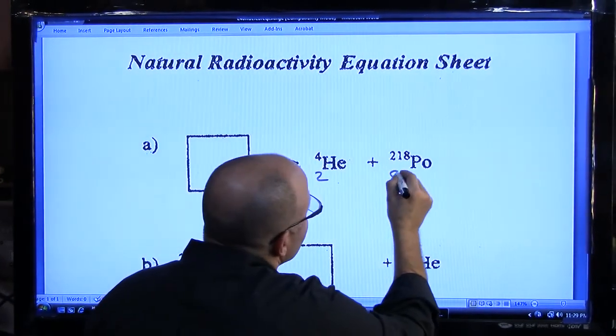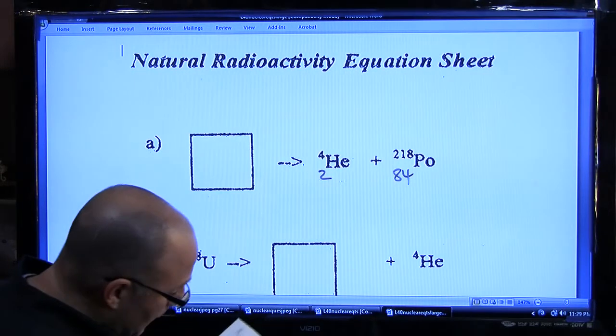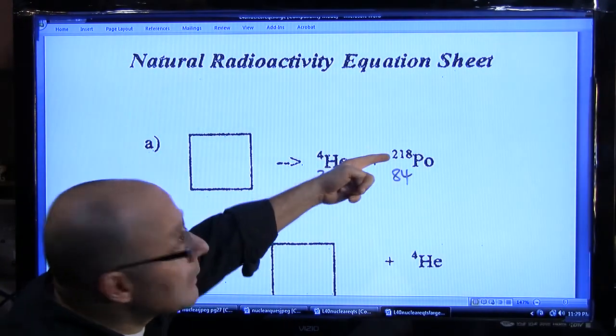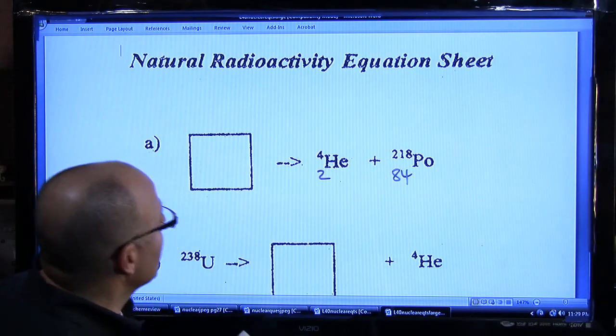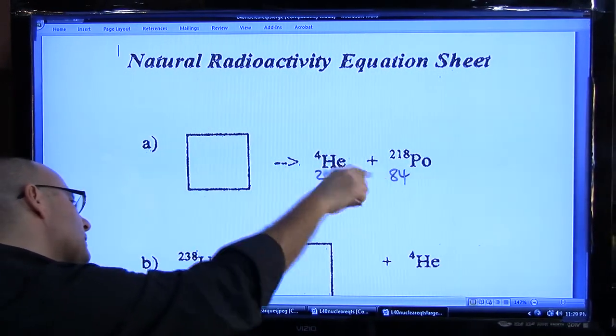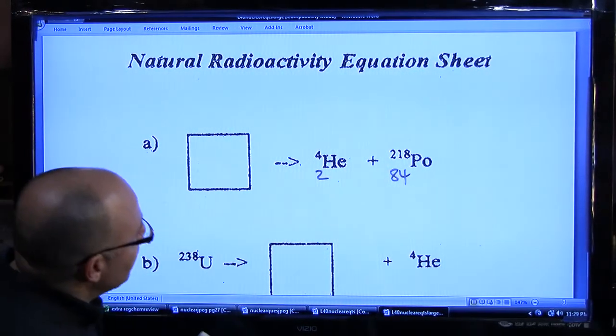Again, when you look up polonium number 84 in the periodic table, you might note that it says 209. Well, this happens to be the 218 isotope of polonium, and so going this way is an emission. It's a subtraction. Going to the left, it would be an addition.